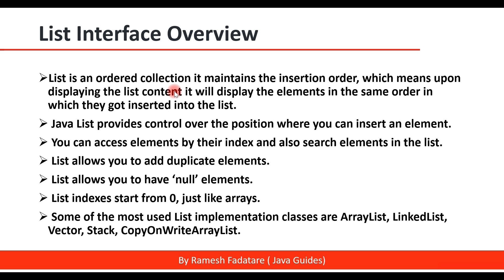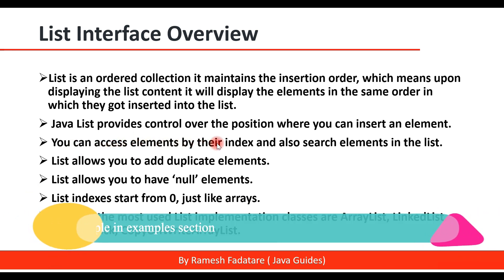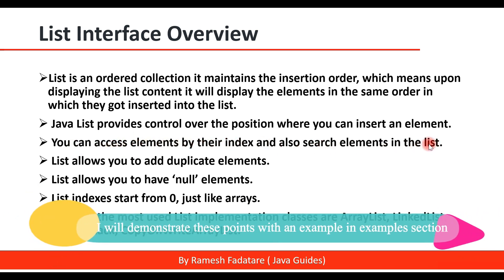A List is also called a sequence and it maintains insertion order. List provides control over the position where you can insert an element. Essentially a List has an index, and that index starts from zero just like arrays. You can access elements by their index and also search elements in the list. List also allows you to add duplicate elements.